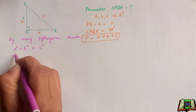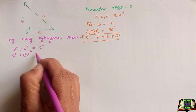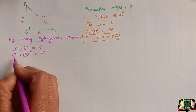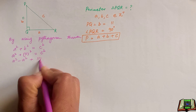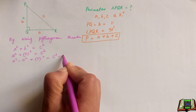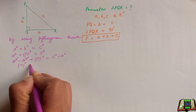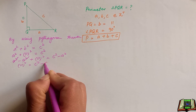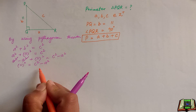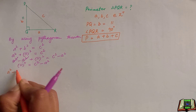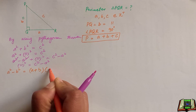A squared as it is; B is given here as 11, so 11 squared is equal to C squared. Here we are going to subtract A squared on both sides of this equation, giving us C squared minus A squared equals 11 squared. The right-hand side of this equation is the same as the algebra identity A squared minus B squared, which we can write as (A plus B) times (A minus B).